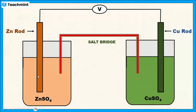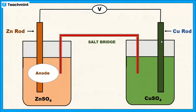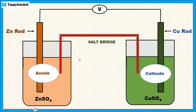At the zinc electrode, oxidation of the metal takes place, resulting in the dissolution of zinc with the liberation of two electrons — so the zinc electrode acts as the anode. The liberated electrons move through the external circuit via the voltmeter and reach the copper electrode. At the copper electrode, cupric ions in the solution receive the electrons and are reduced to their metal form, so reduction takes place and the copper electrode acts as the cathode.